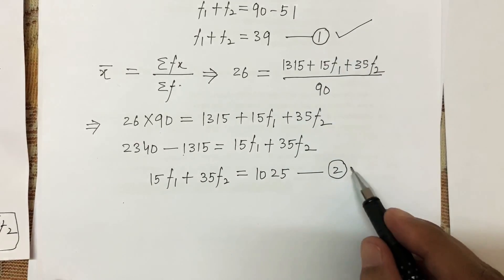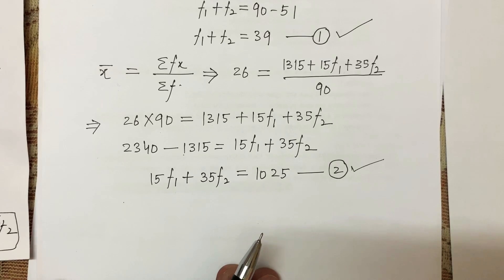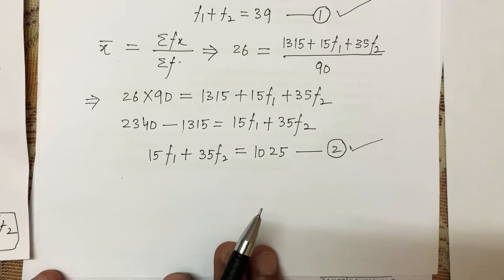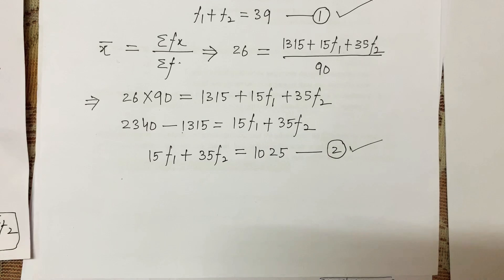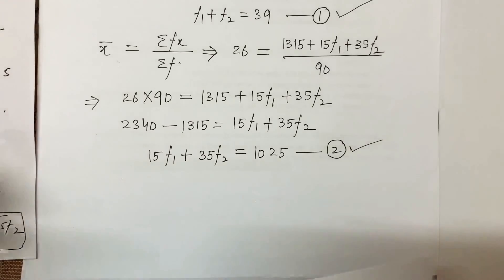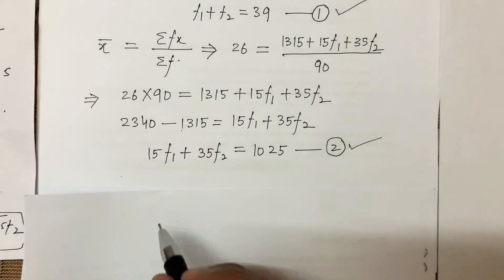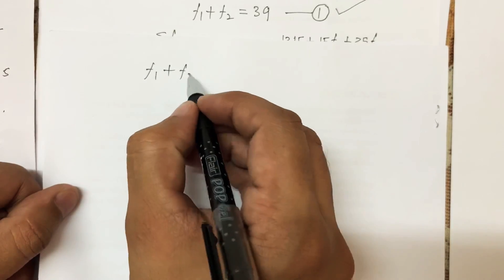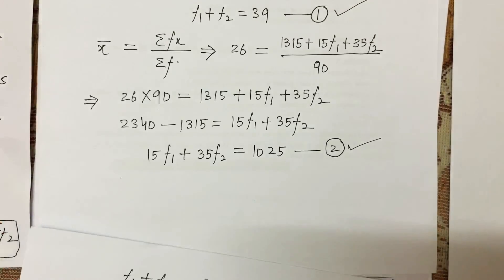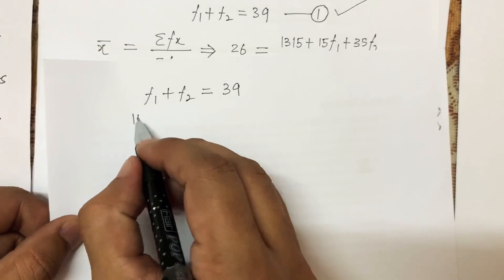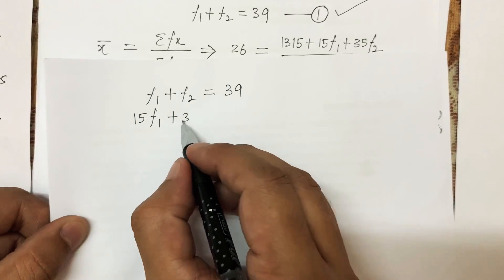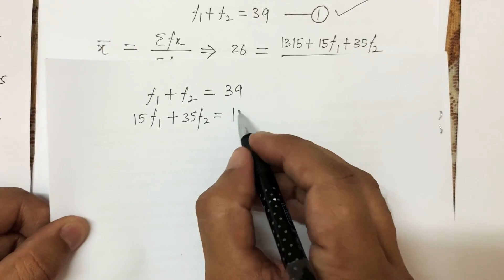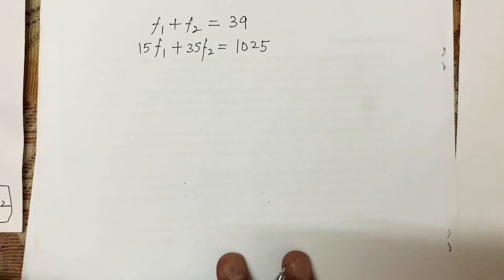I'll use Equation 1 and Equation 2 to find the values of f1 and f2, using simultaneous equations as done in class 8 or 9. Writing both equations on a fresh sheet: Equation 1 is f1 + f2 = 39, and Equation 2 is 15f1 + 35f2 = 1025.